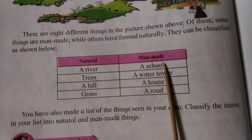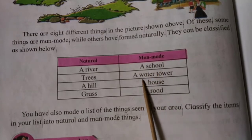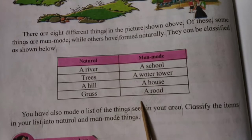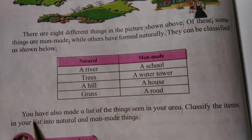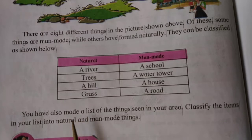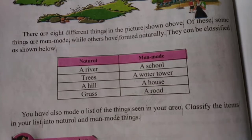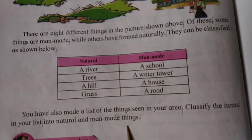Man-made: a school, a water tower, a house, a road. You have also made a list of the things seen in your area. Classify the items in your list into natural and man-made things.